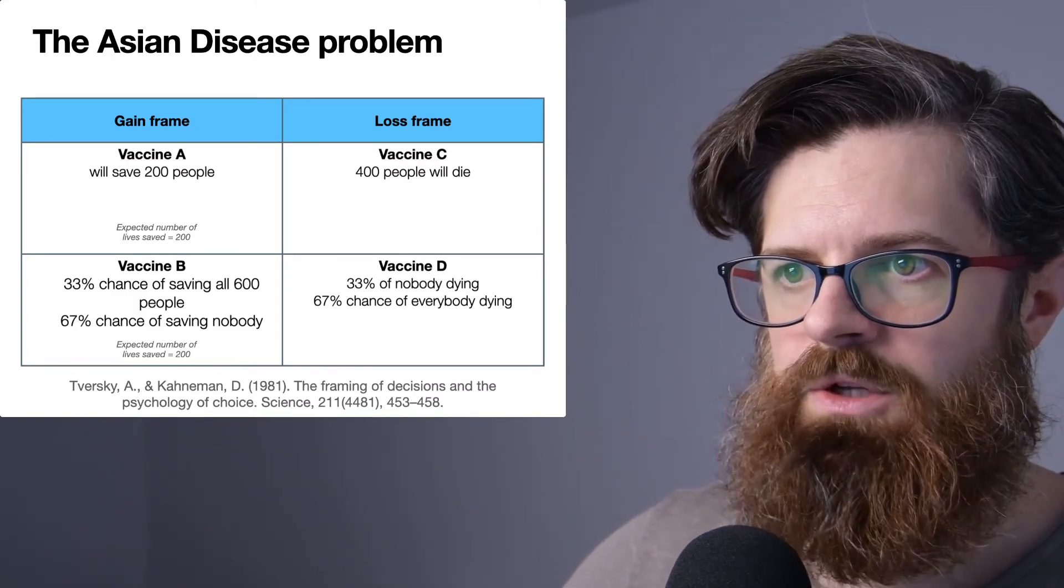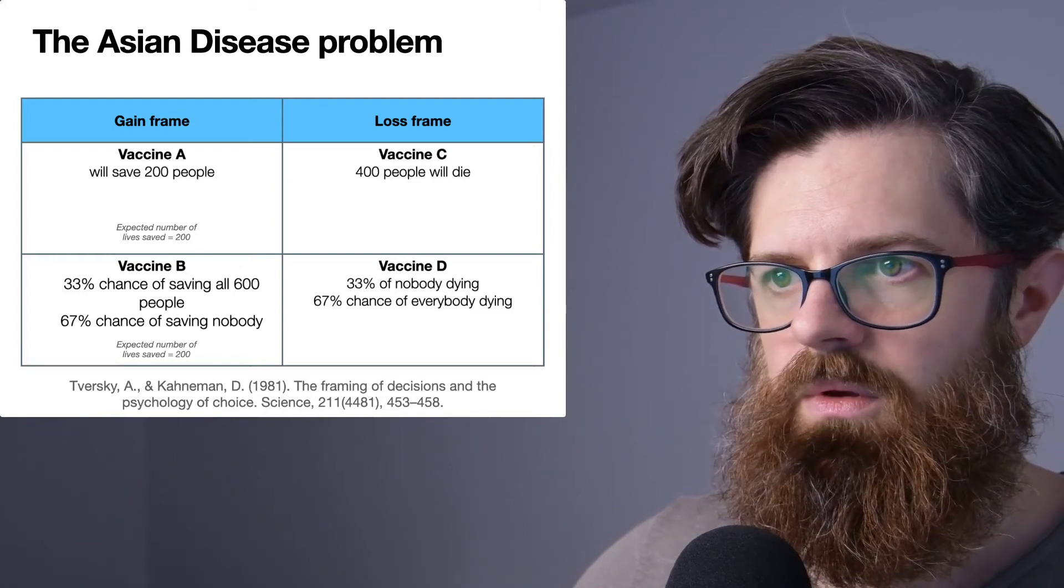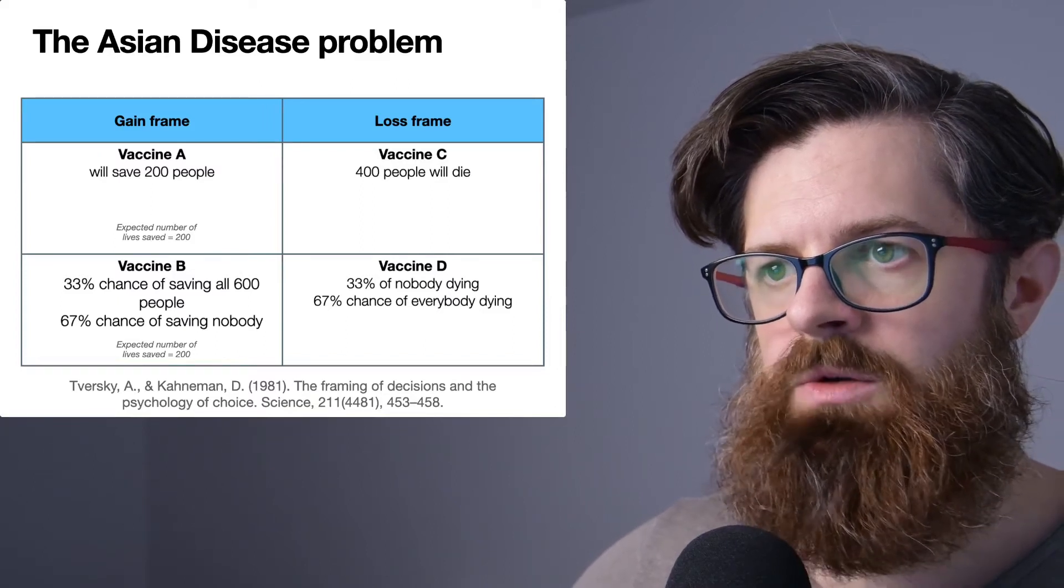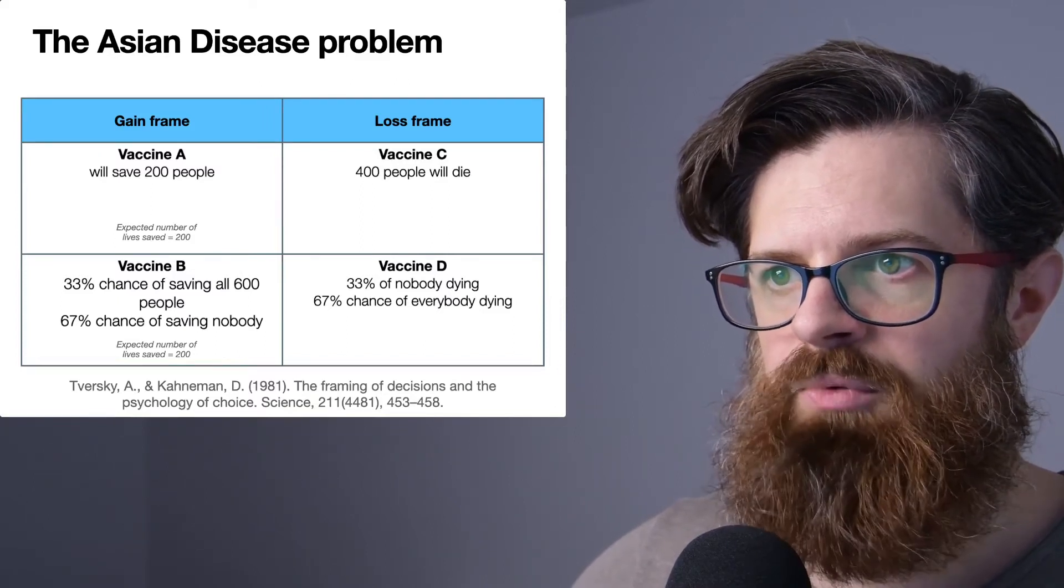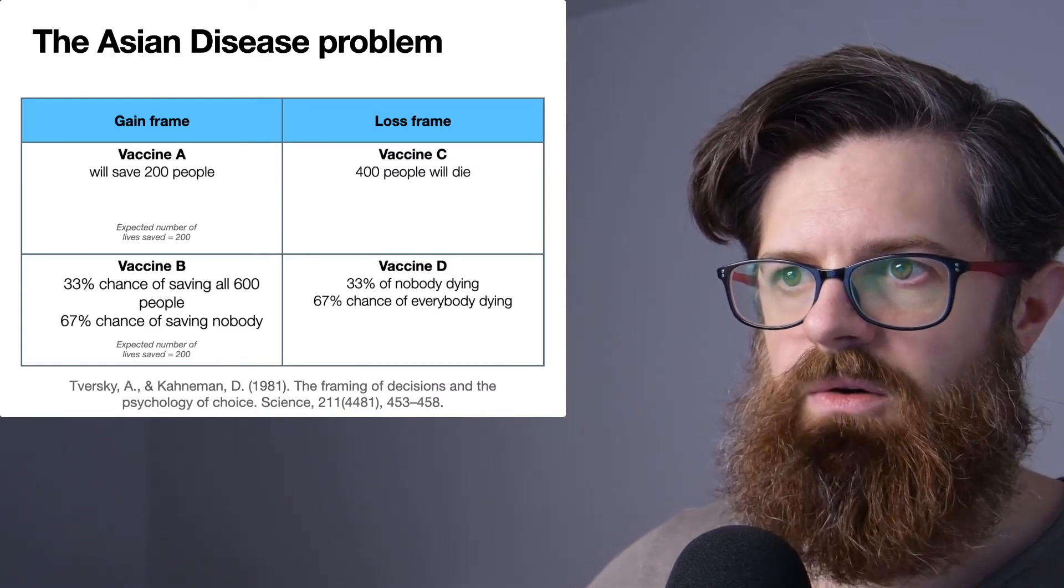It could also be because of non-linear utility functions. It could be that some people would have a preference for risky choices—so Vaccine B or Vaccine A.